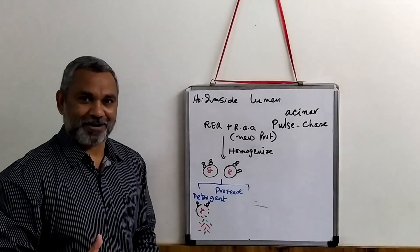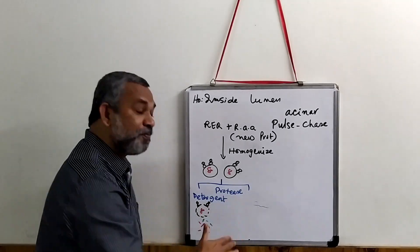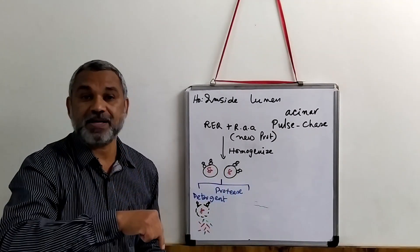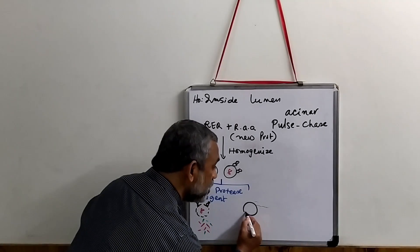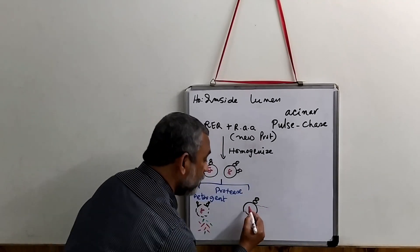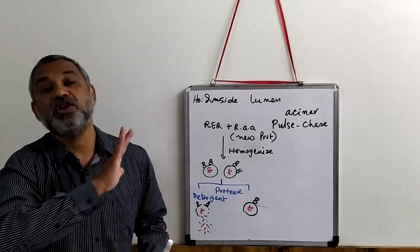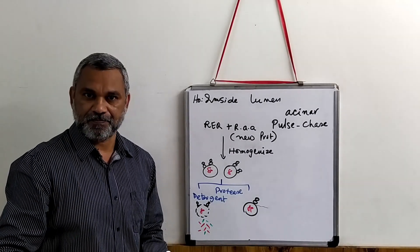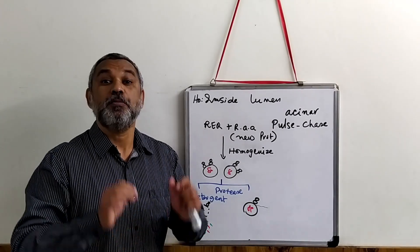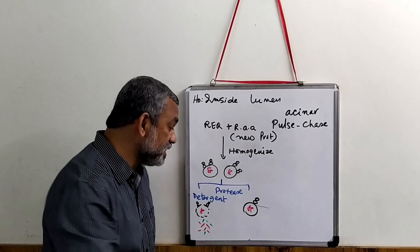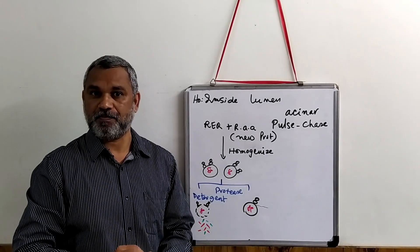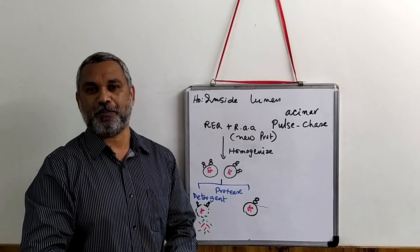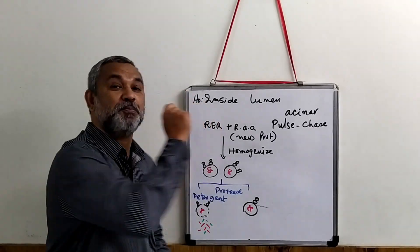The second microsome portion was treated only with protease, without detergent. The protease cannot get inside the intact microsome. If no protein is detected outside, it confirms the protein is inside. This experiment proved that the newly formed protein is indeed secreted into the microsome, equivalent to the lumen of the endoplasmic reticulum.